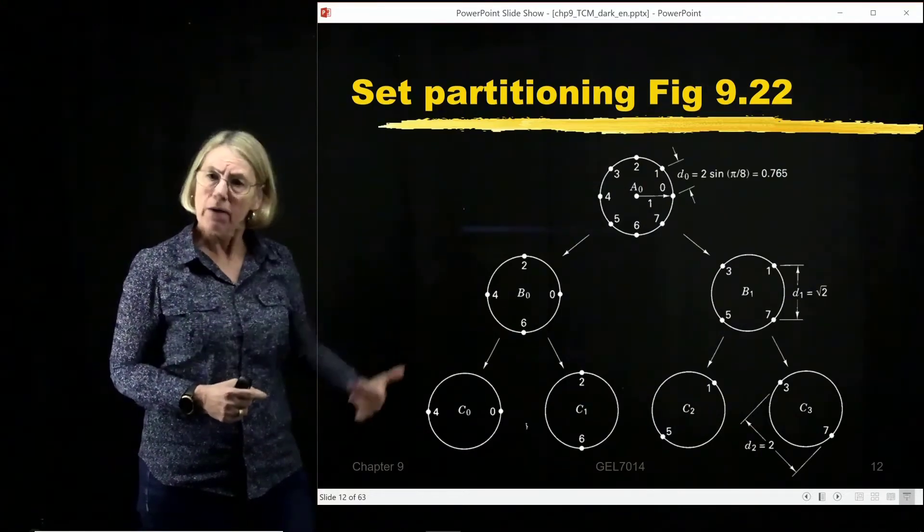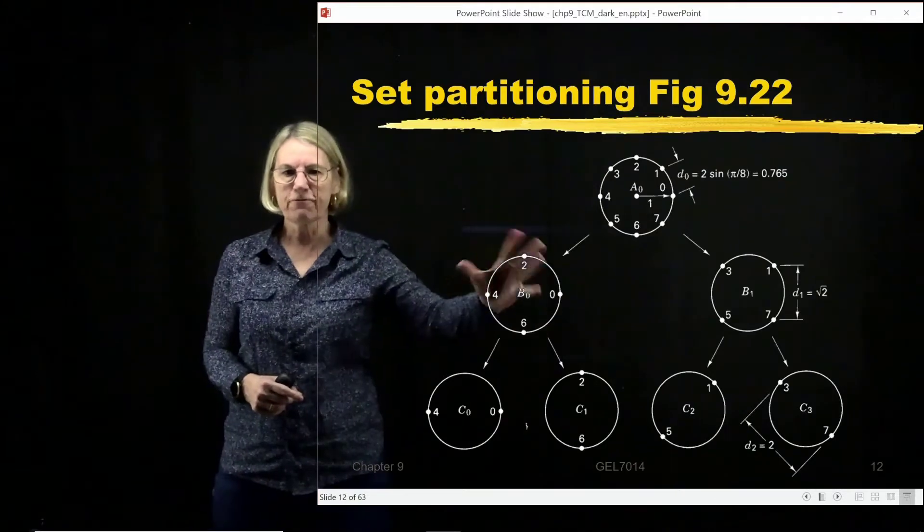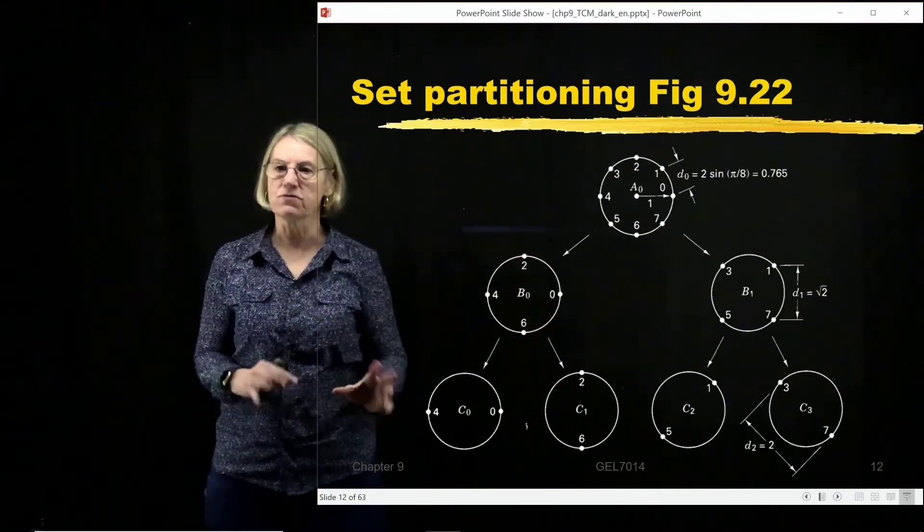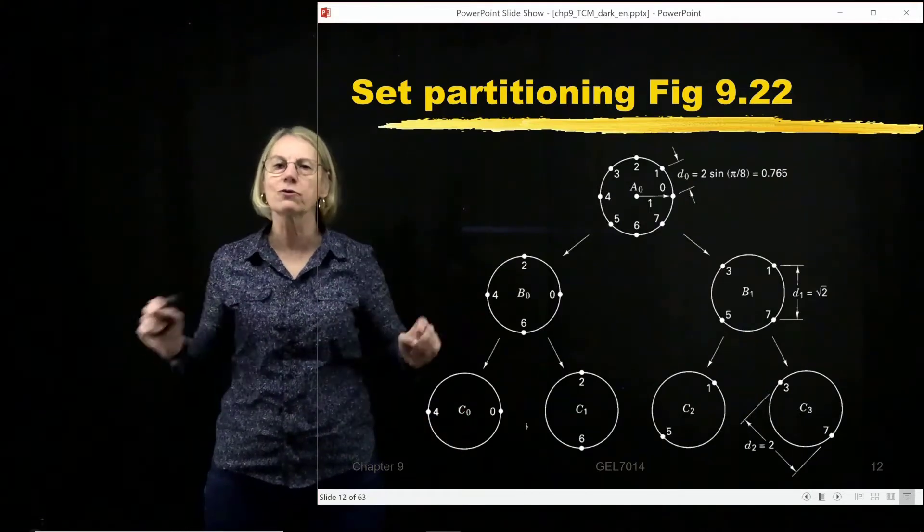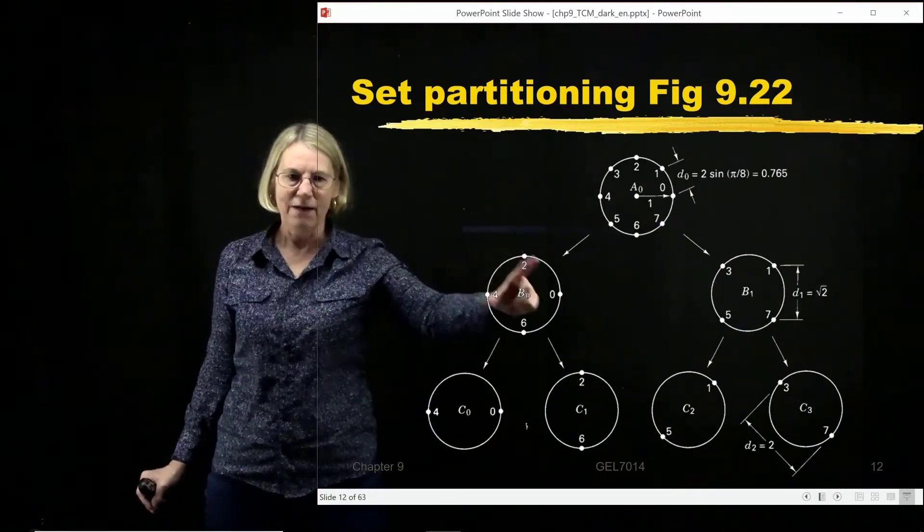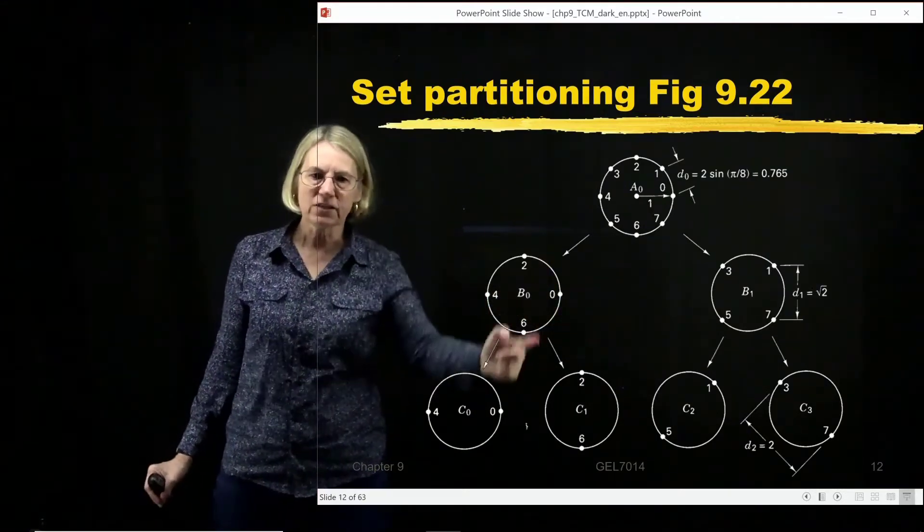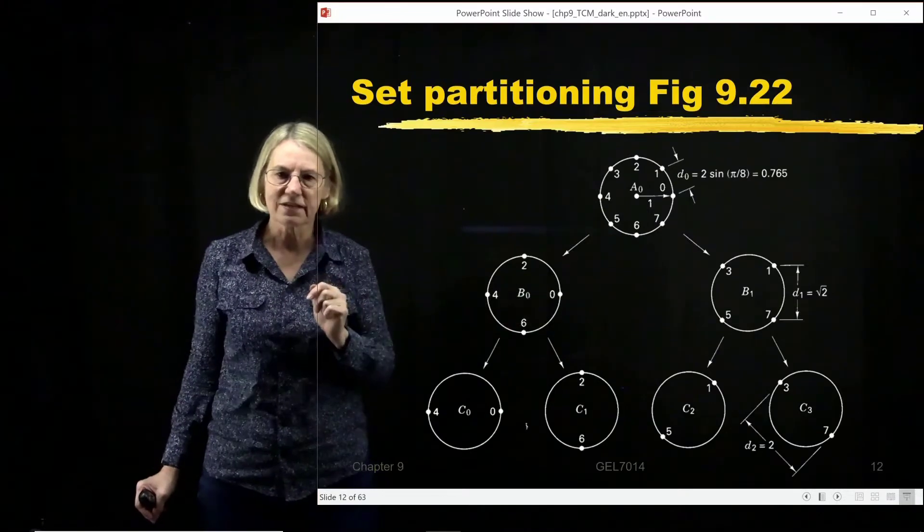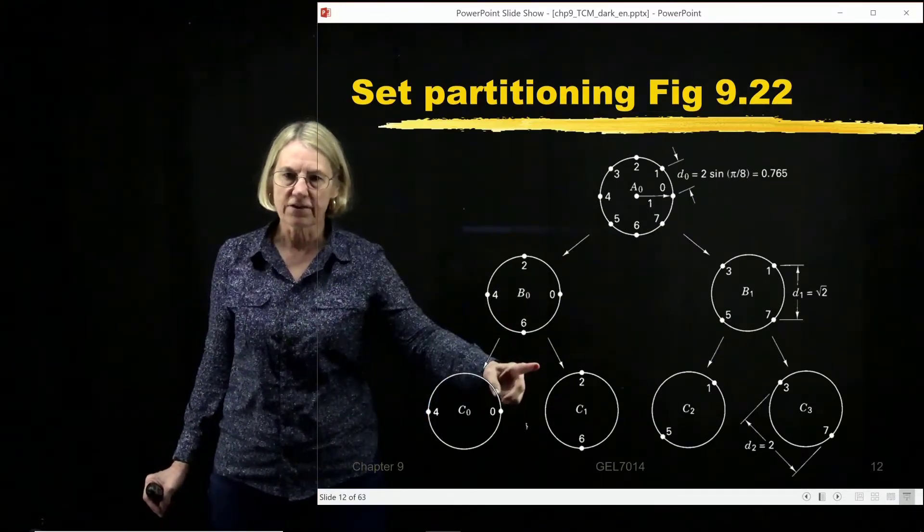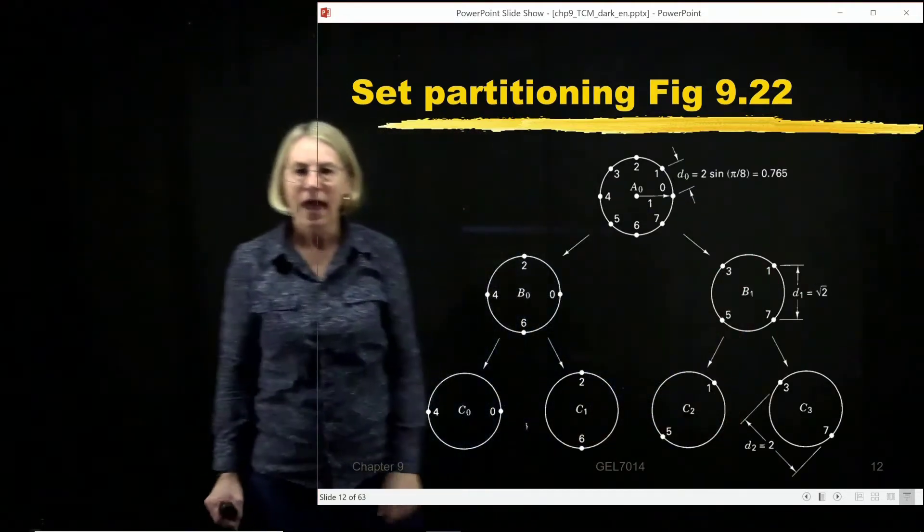The next step, we keep going until we just get pairs. I take this group of 4 and create two groups of 2, getting them as far away as possible. I'm always trying to increase the minimum distance. I'm not going to take 2 and 4 together or 0 and 6 together. I'm going to take the ones that are at opposite ends. So I get 0, 4 in one group, 2, 6 in the other, and do the same subdivision here.